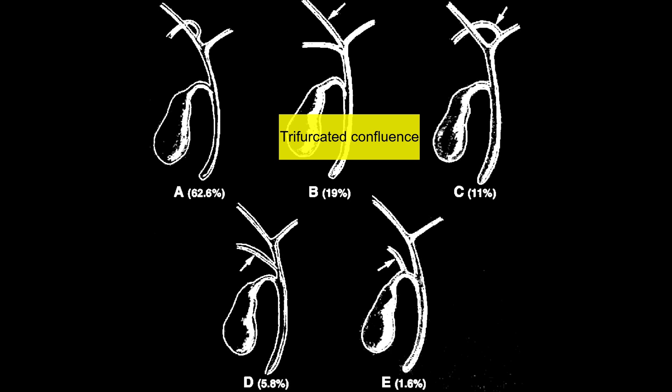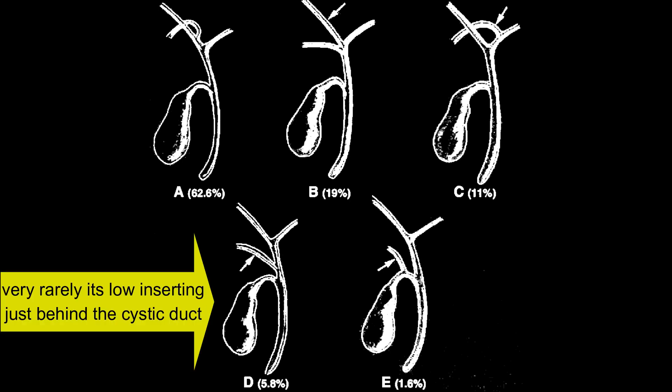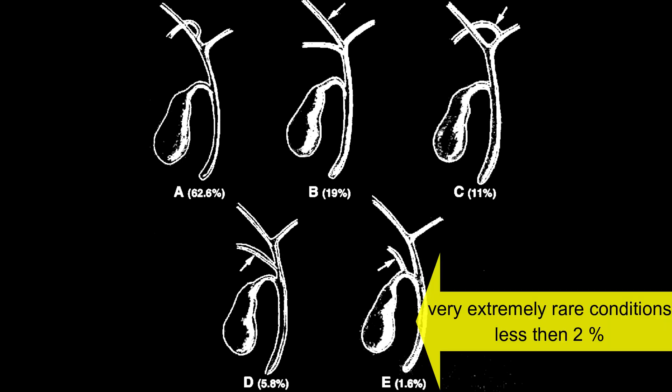In around 11% of patients, the right duct comes from the backside and enters into the left duct. In a very rare around 5 to 5.5% of cases, the right posterior sectoral duct is found to insert quite low, and in less than 1 to 2% of patients the cystic duct is found to be opening into the low-inserting right posterior sectoral duct.